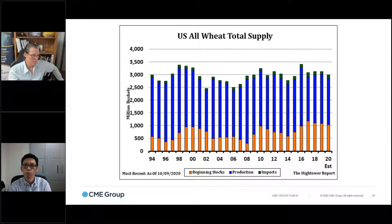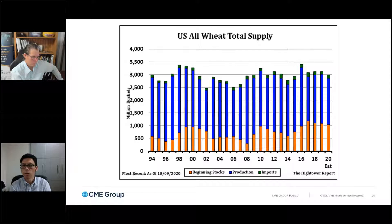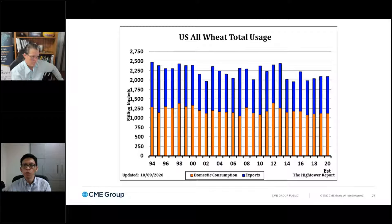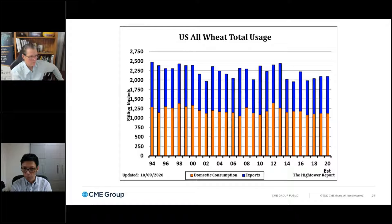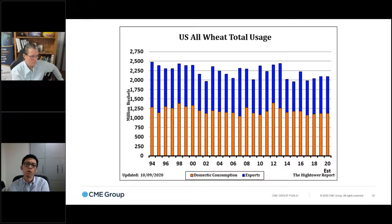The wheat supply over the years has been kind of flat — it's not really grown, neither has it declined, unlike corn which has grown significantly over the years. Usage has also been kind of flat, which is actually a little bit of a surprise because the US population has grown dramatically. Every year the US population continues to increase, yet total usage of wheat flatlines. This tells you that wheat consumption — bread and noodle consumption in the US — has actually declined on a per capita basis.